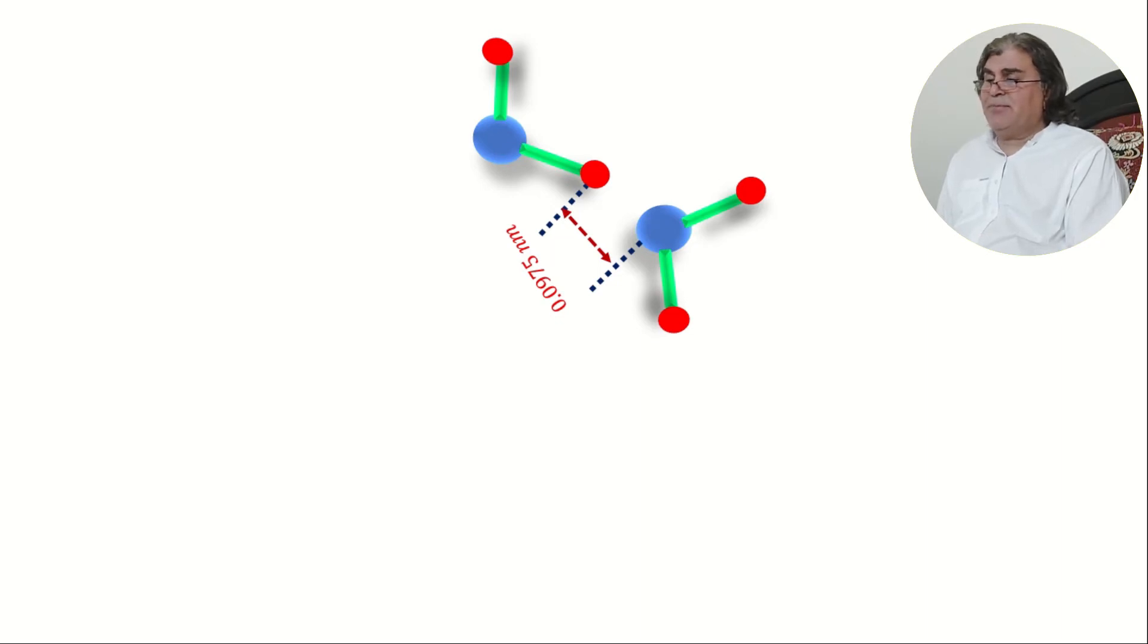At this separation, the positive terminal and the negative terminals of the two molecules again interact and make a bond which we call a hydrogen bond. This new interaction is again making an angle of 104.5 degrees. With these positions of the two molecules, this structure is stable.